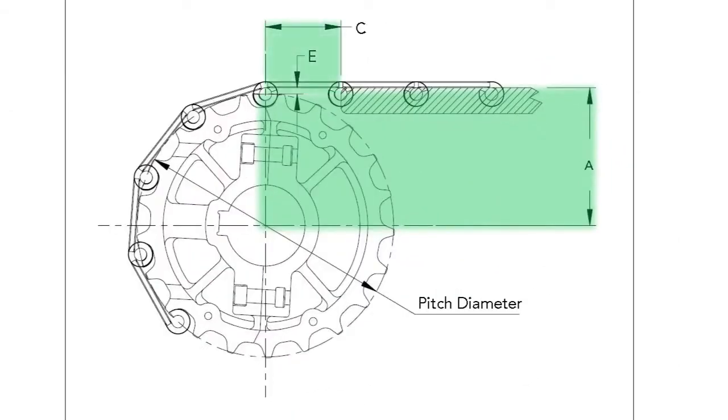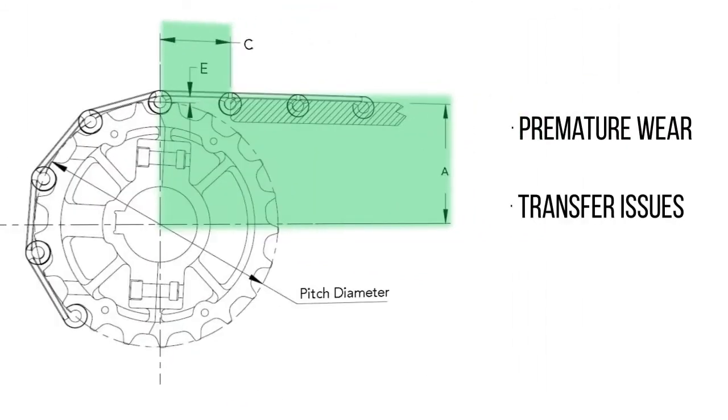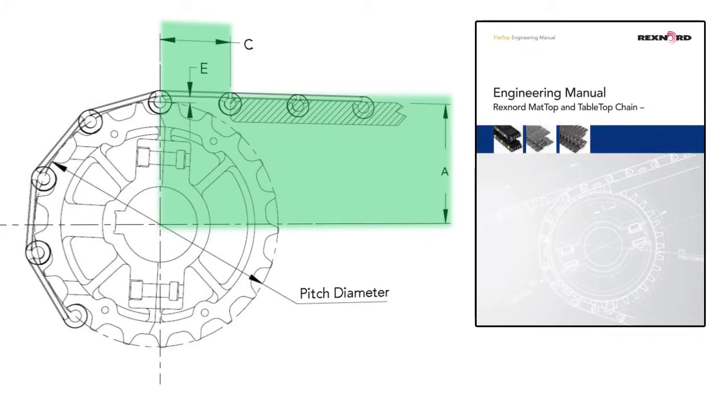If either the A or C dimensions are off, they can cause premature wear and transfer issues. Proper shaft dimensions may be found in our engineering manual or by contacting application engineering.